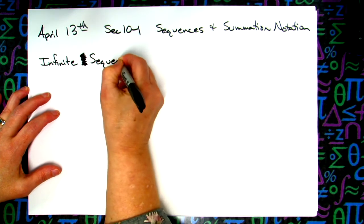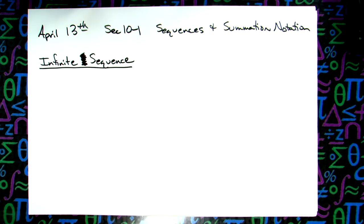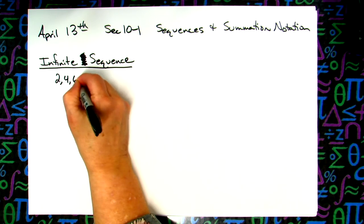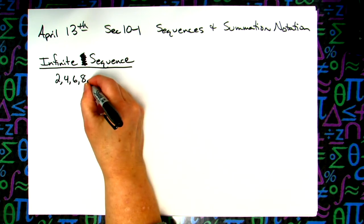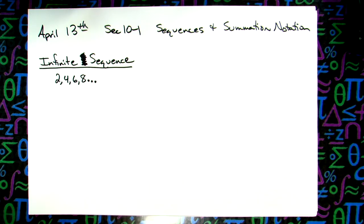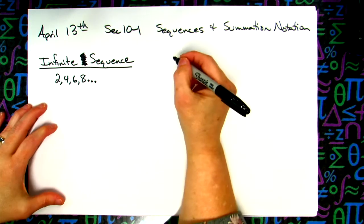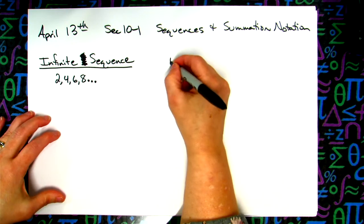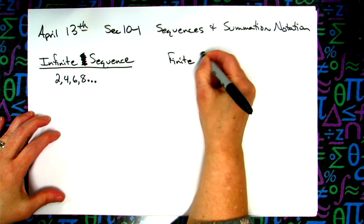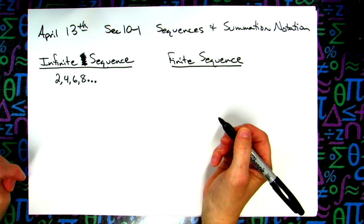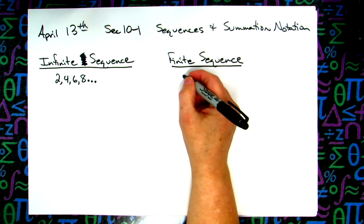Infinite means it goes on forever and ever. So basically the example I just gave verbally — 2, 4, 6, 8 — could keep going forever and ever, so you put three little dots on there. Infinite means it goes on to infinity. A finite sequence, on the other hand, is one that would stop.